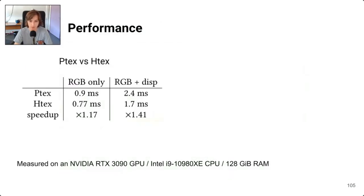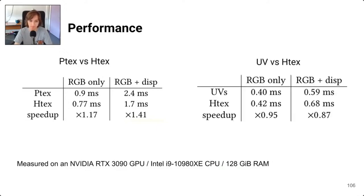For performance, comparing HTex and Borderless Ptex with both a single albedo texture and an additional displacement texture, in both cases HTex is faster. Comparing HTex with UV mapping, HTex is slower due to additional memory accesses and texture fetches, but it remains in the same ballpark and achieves real-time performance by far.